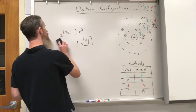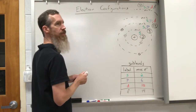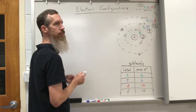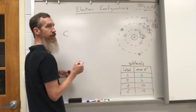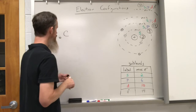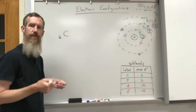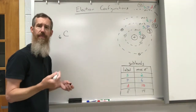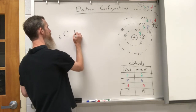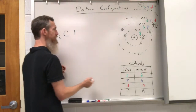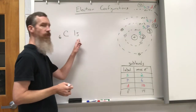Now if we go to something a little more complicated, I'm going to jump to carbon. Carbon has six electrons, so I have to deal with six electrons and do them in order. We're going to start at the beginning with the first energy level. The first energy level has an s sub-level, and that sub-level can hold up to two electrons.